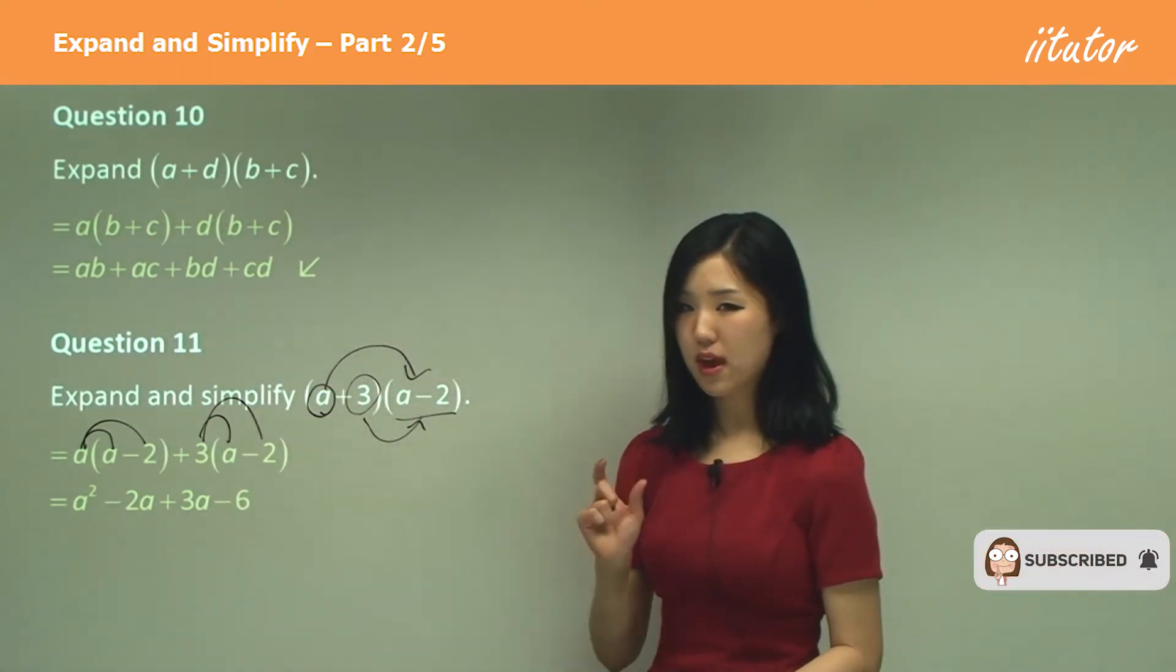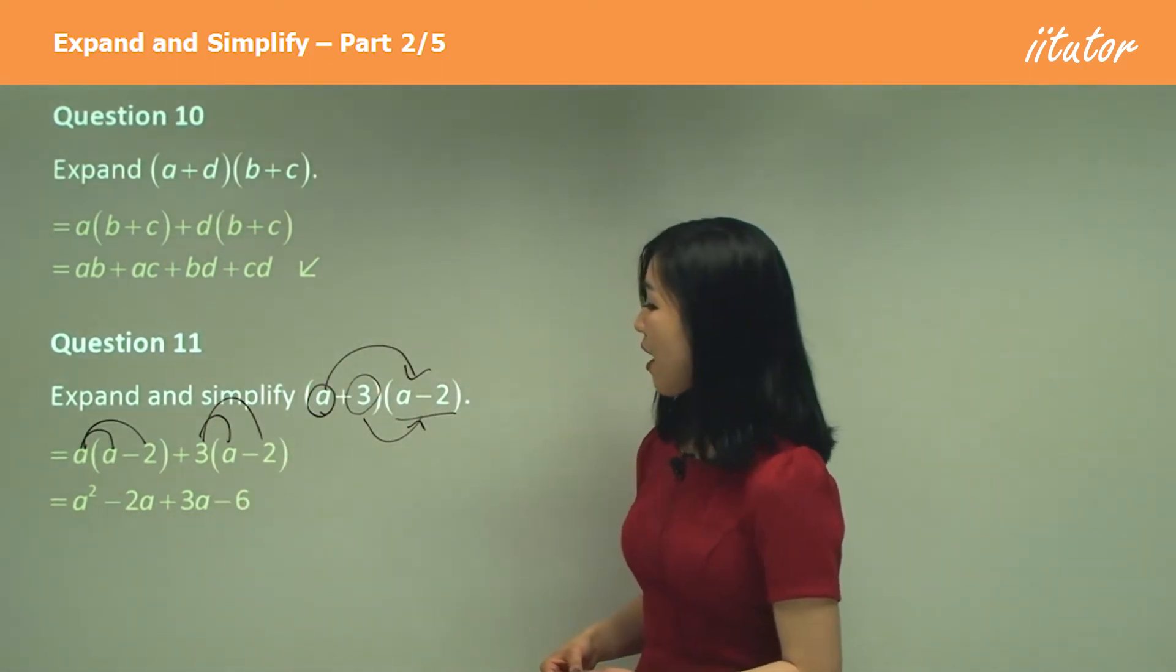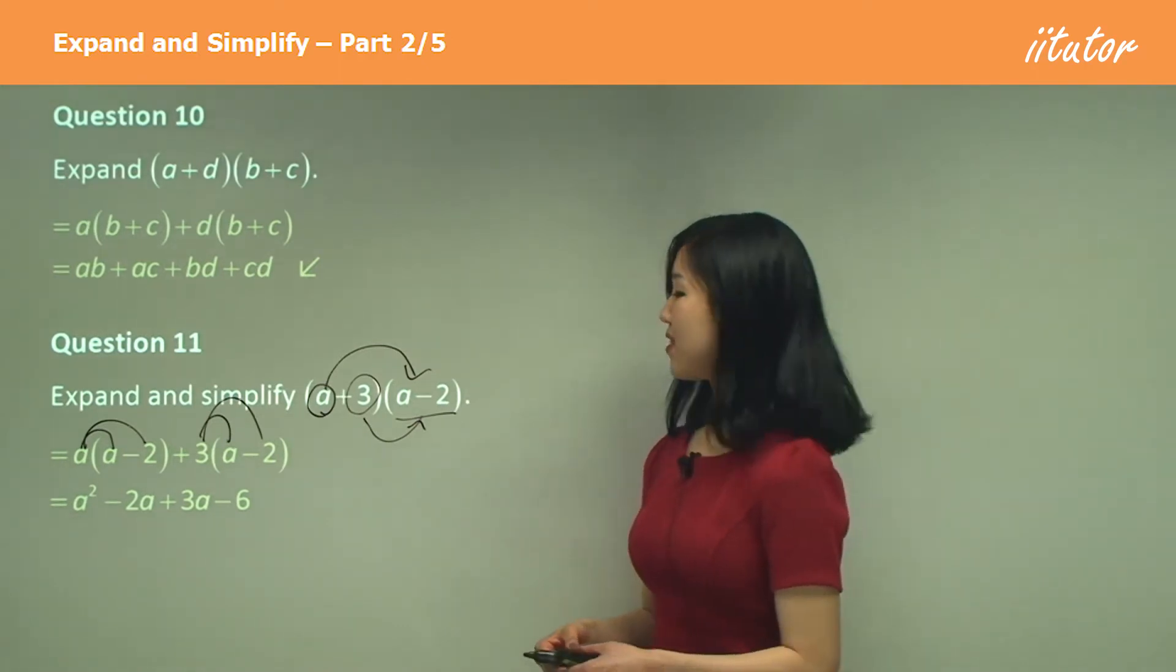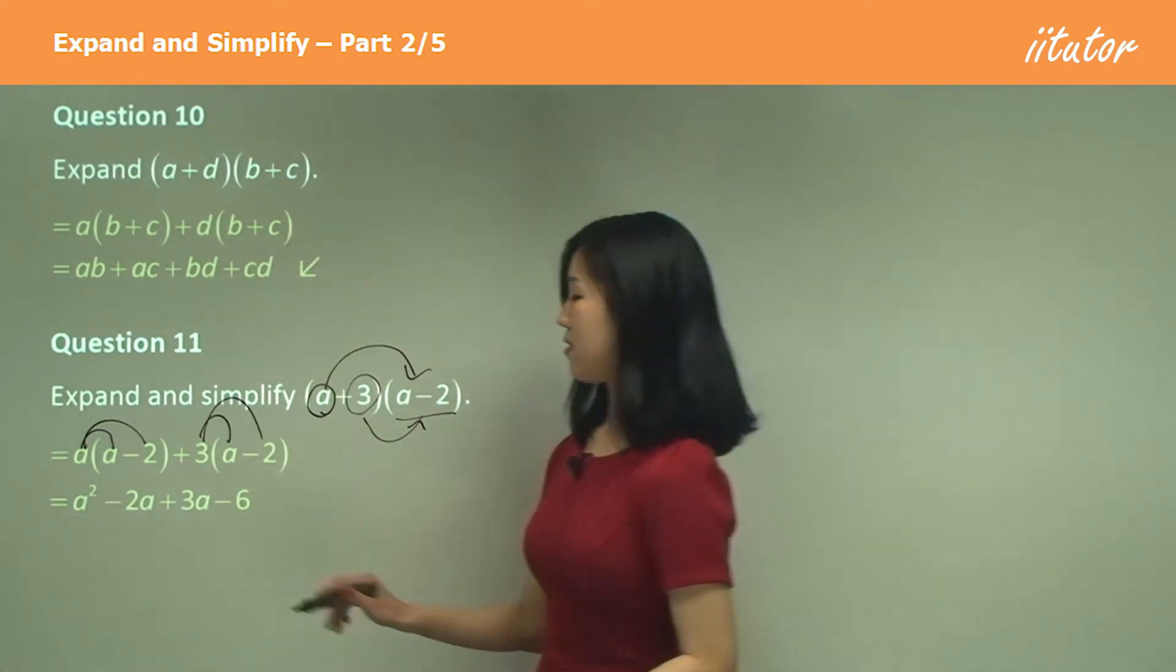So again, be careful with the signs. Now, are there like terms? Can we gather anything up together? Yes, we can. Look at these. We've got negative two A and we've got a three A.